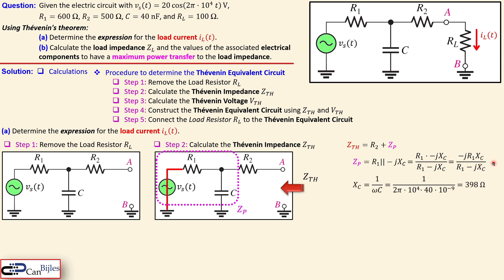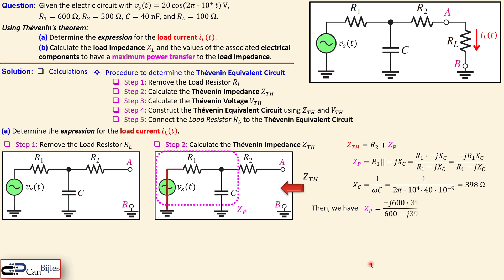Let's calculate XC. XC is determined by the expression 1/(ωC). Omega is 2π × 10⁴, and C is 40 nanofarads as given, so XC is approximately 398 ohms. With R1 equal to 600 ohms, we substitute everything to get our expression for ZP.